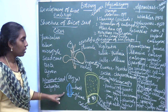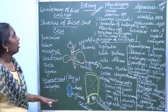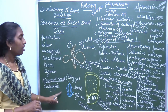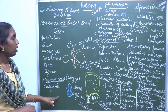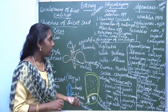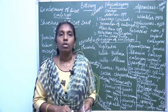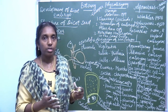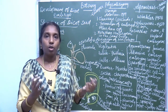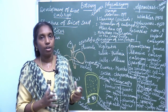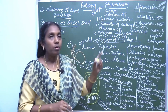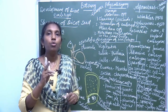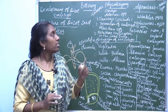First question: development of dicot embryo. Second question: structure of dicot seed. Third question: structure of monocot seed. Another process is called apomixis. What is apomixis? There is also a process called amphimixis — the normal fertilization process in flowering plants. Apomixis does not involve the two main processes: meiosis and syngamy.